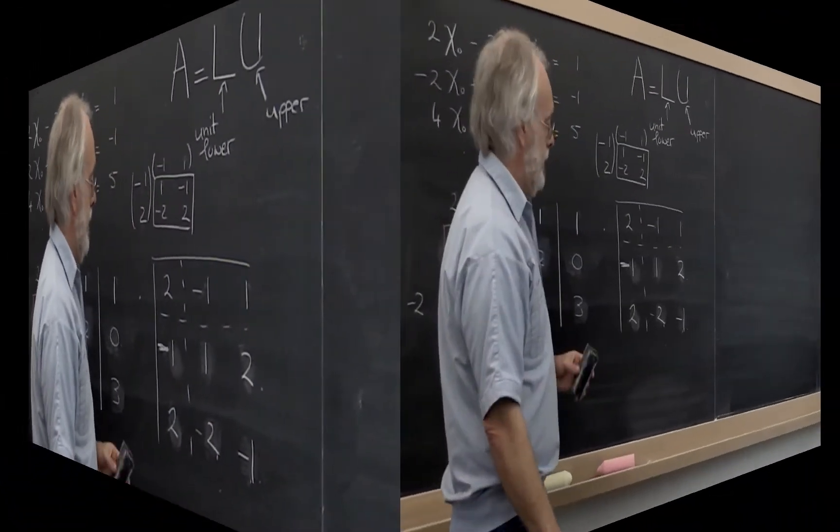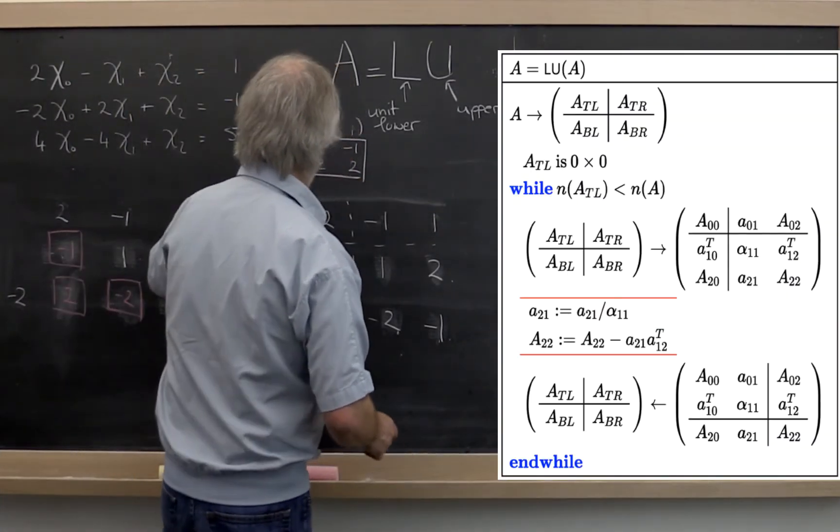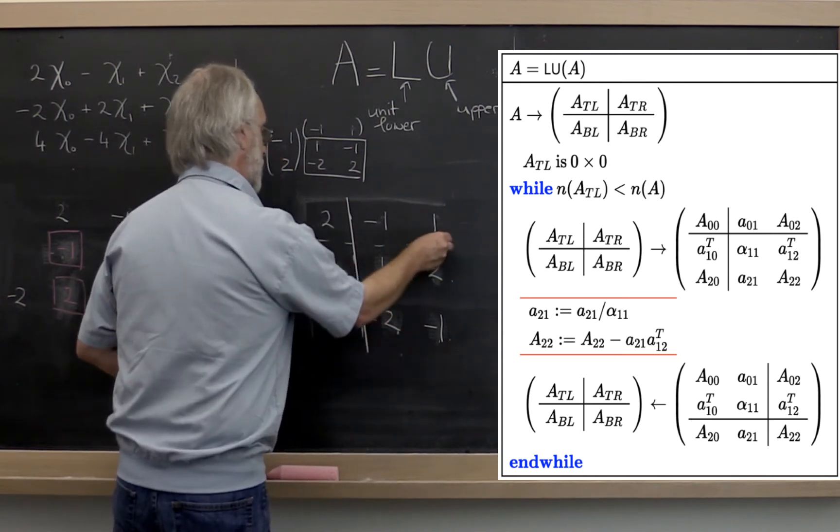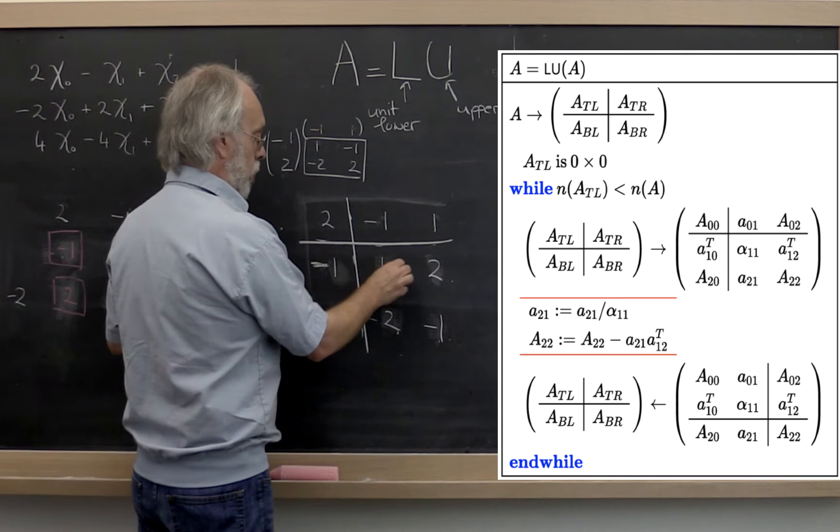We're good. And then the algorithm tells you to move forward and to put this line right here. Then in the next step, this becomes your alpha 1,1.